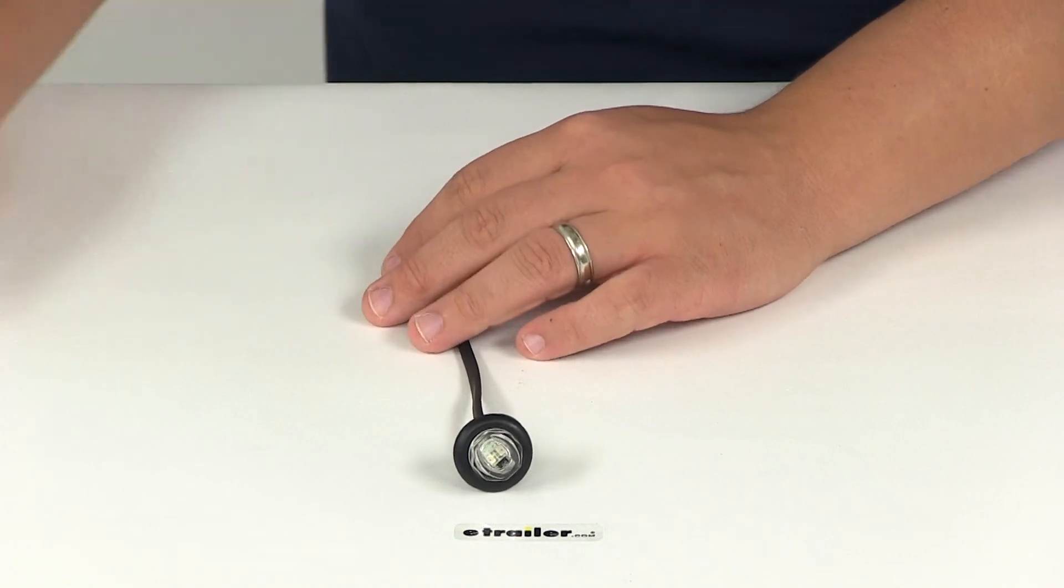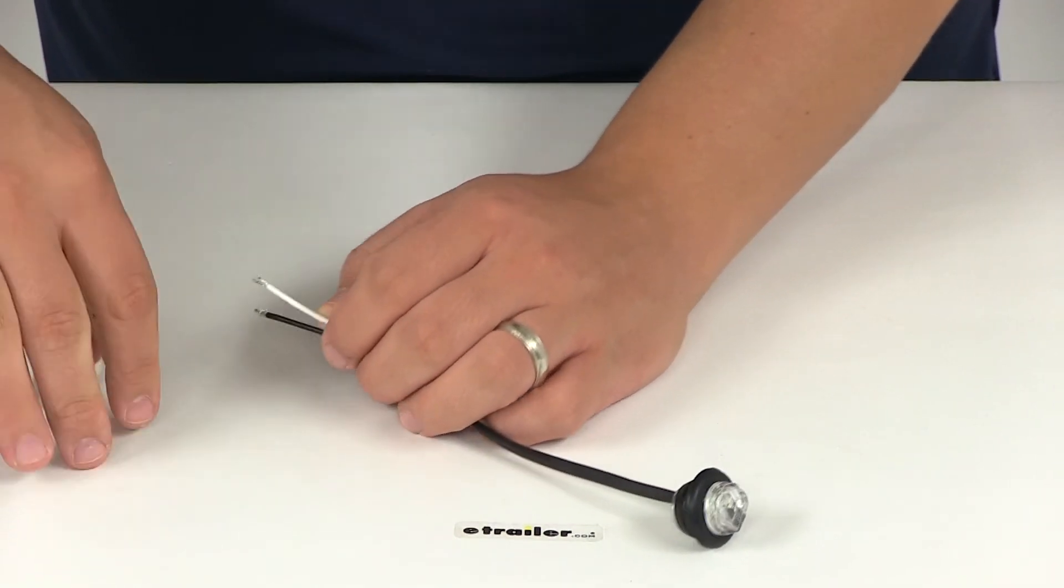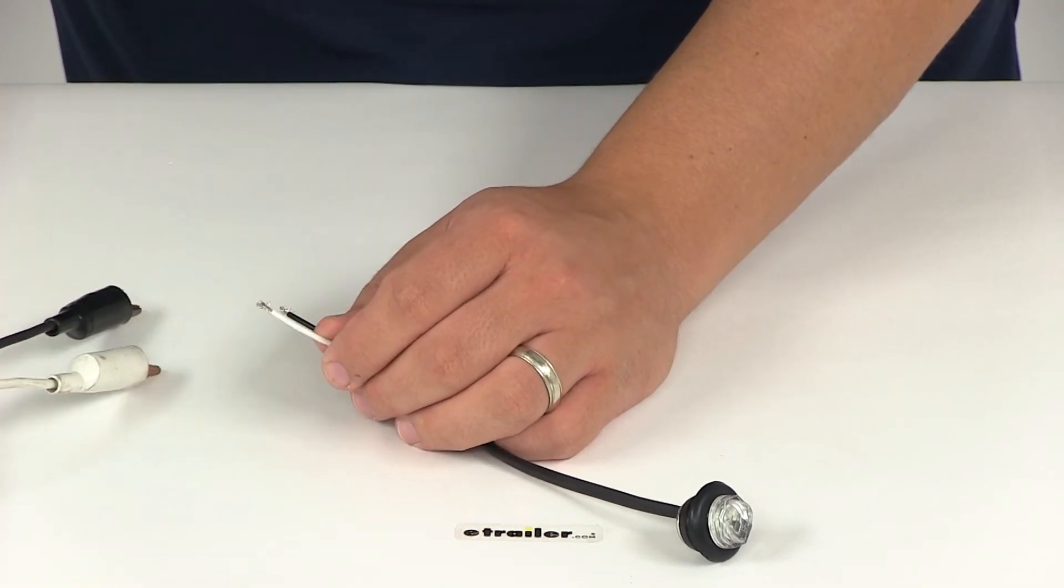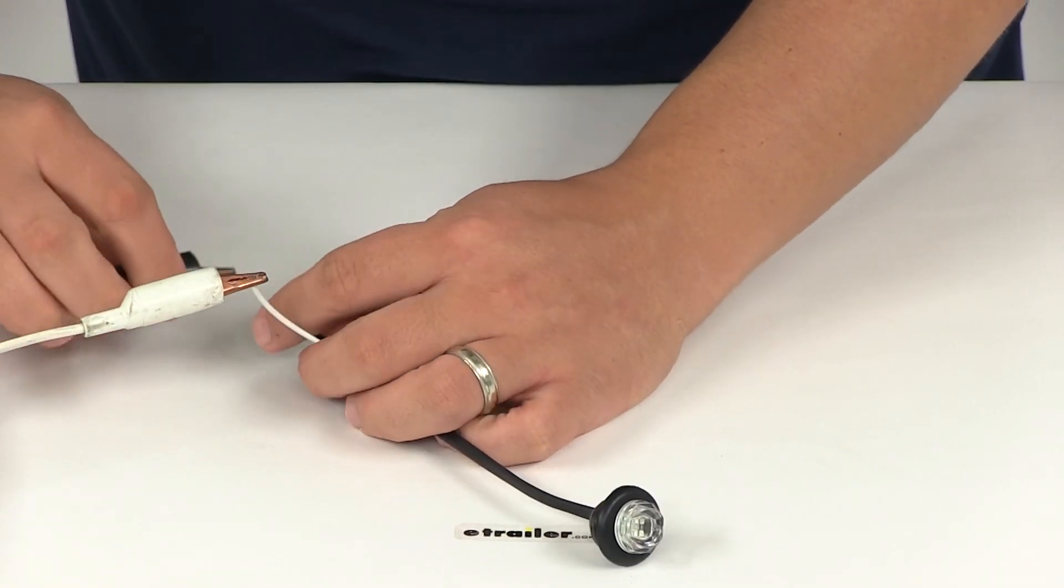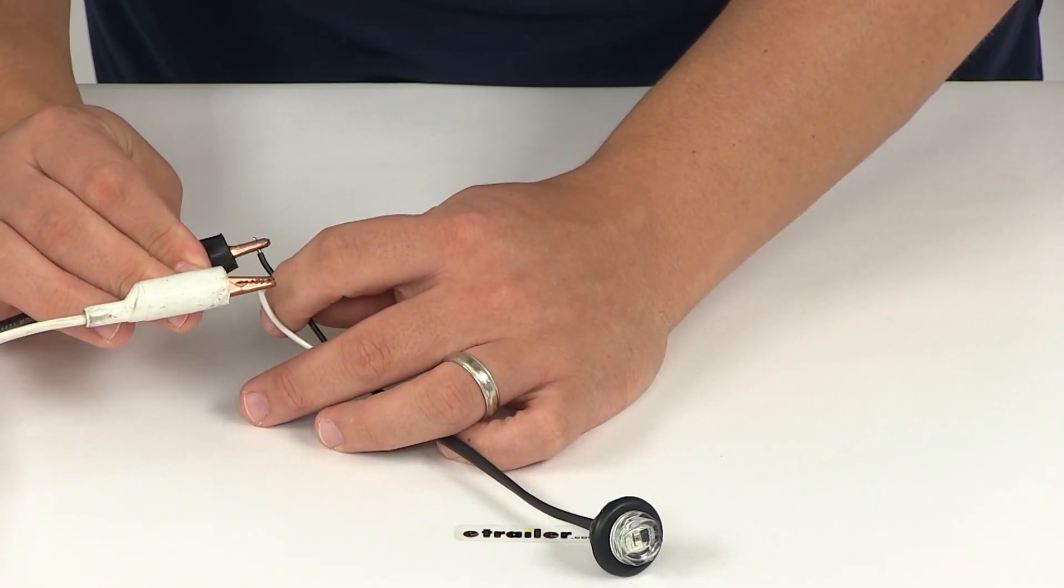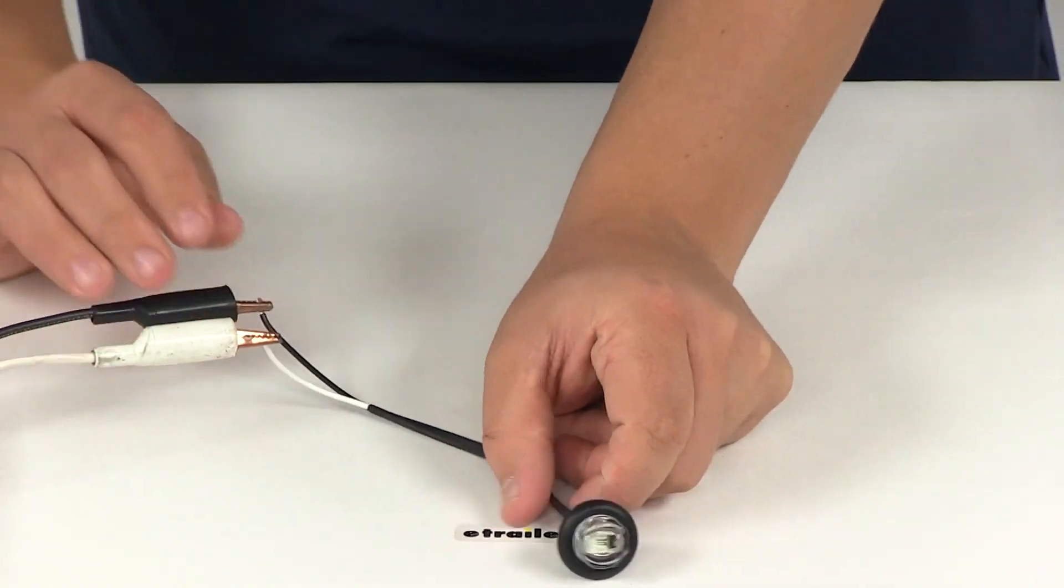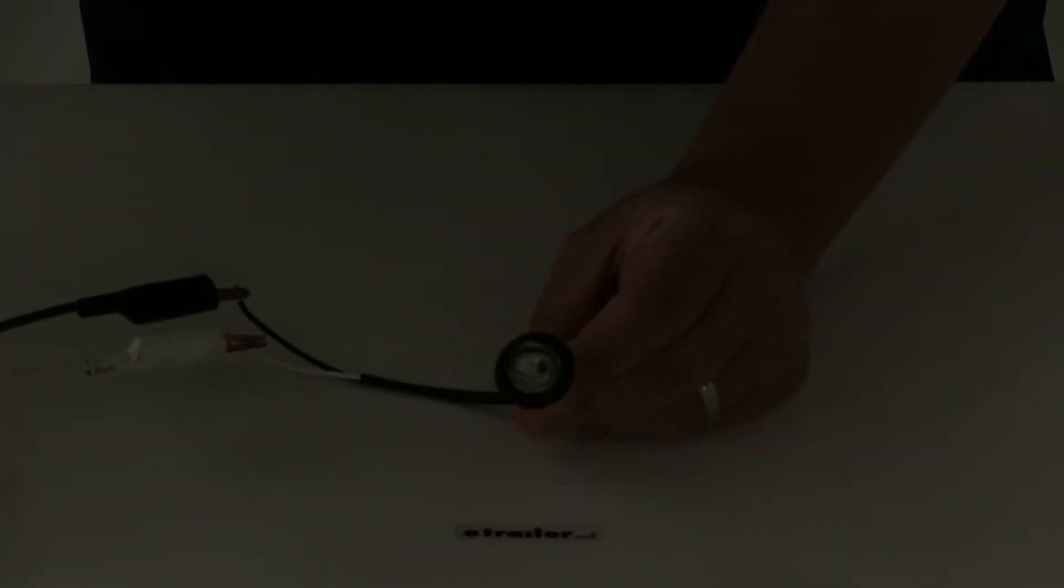Let's go ahead and hook it up to our external power source. We just need to make our ground connection and connect our external power. Go ahead and turn off our overhead lights and then turn it on.